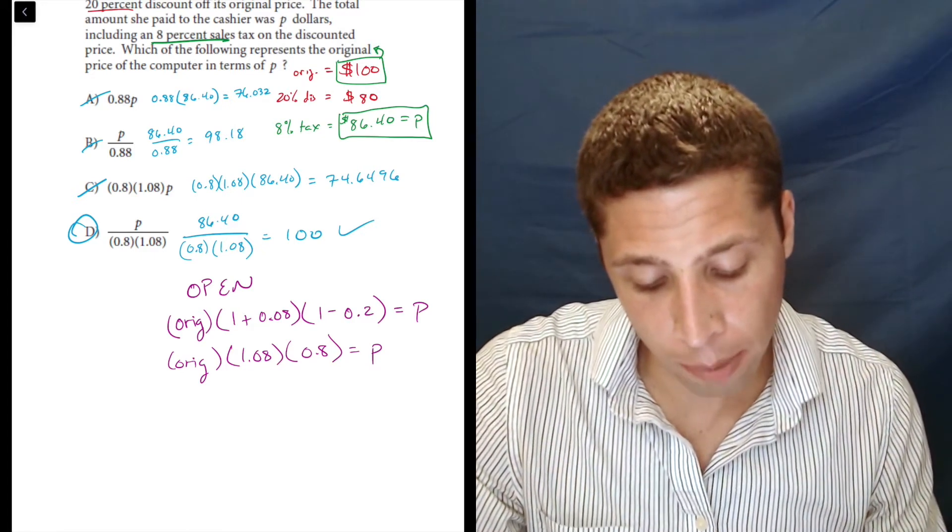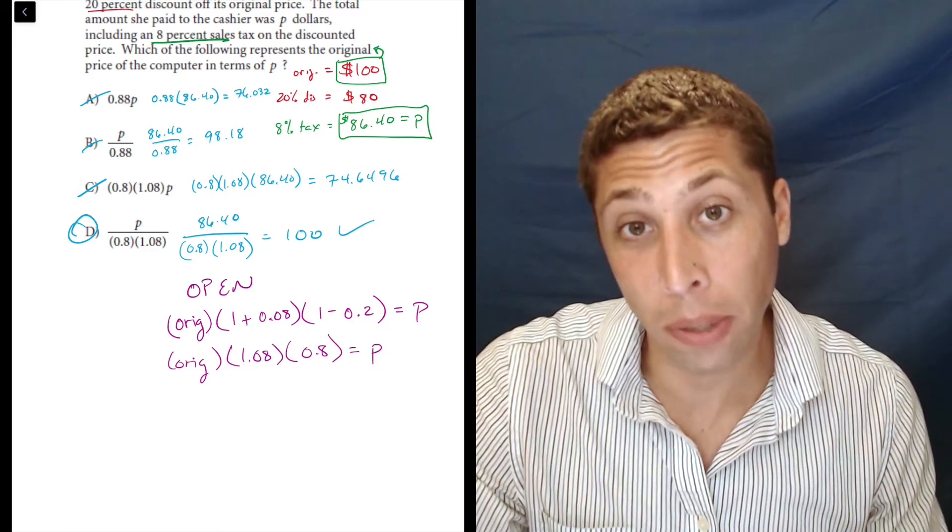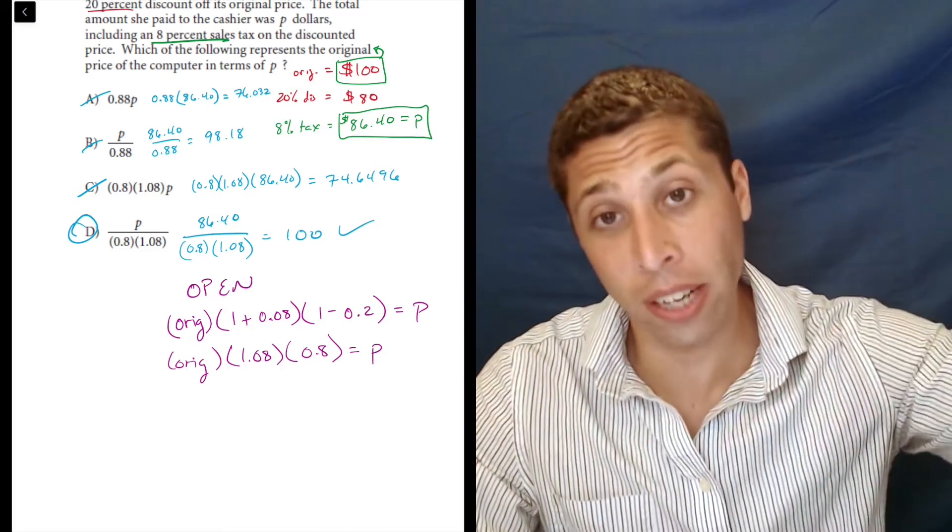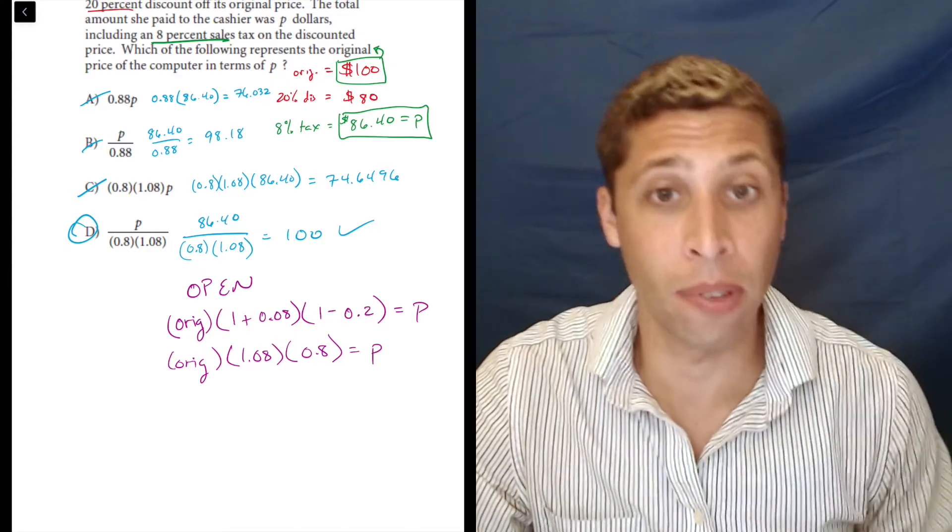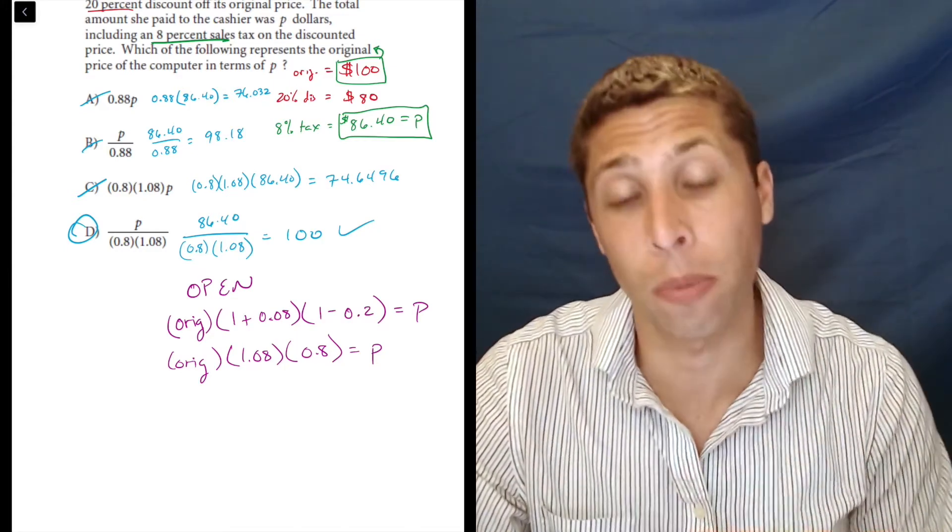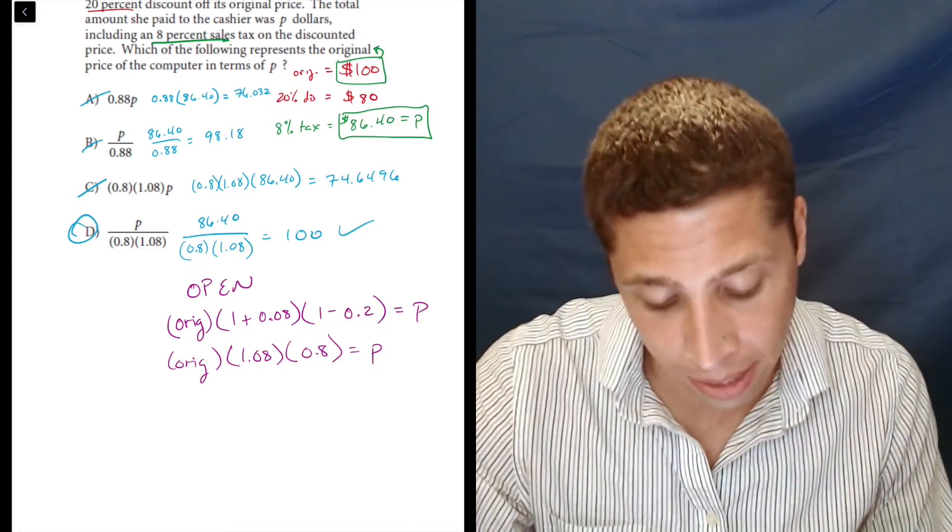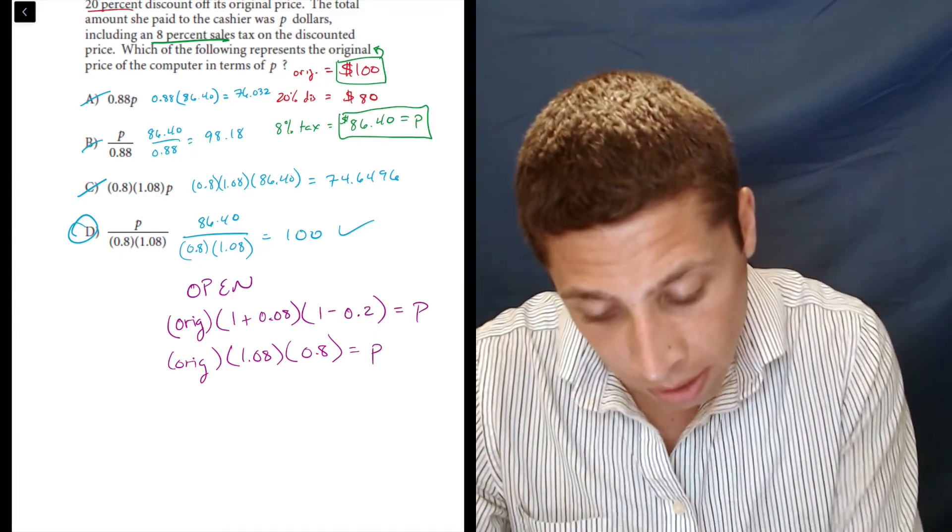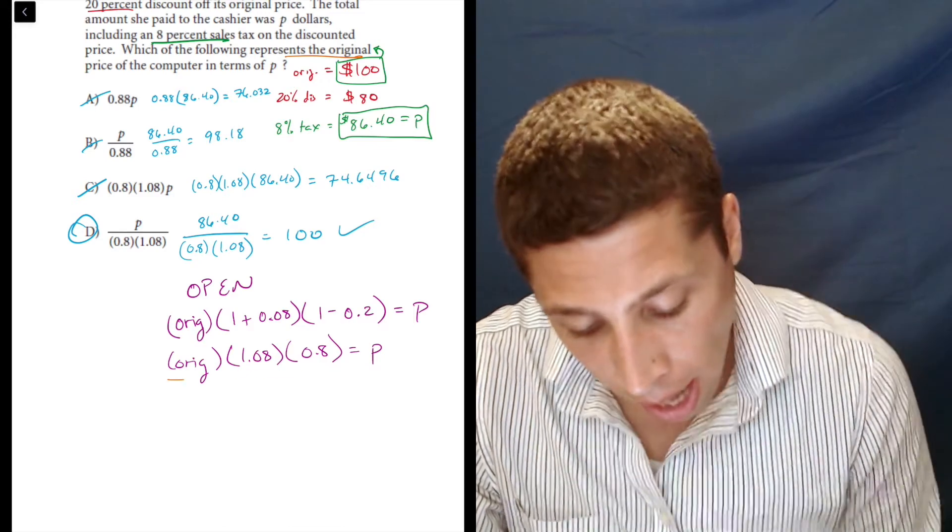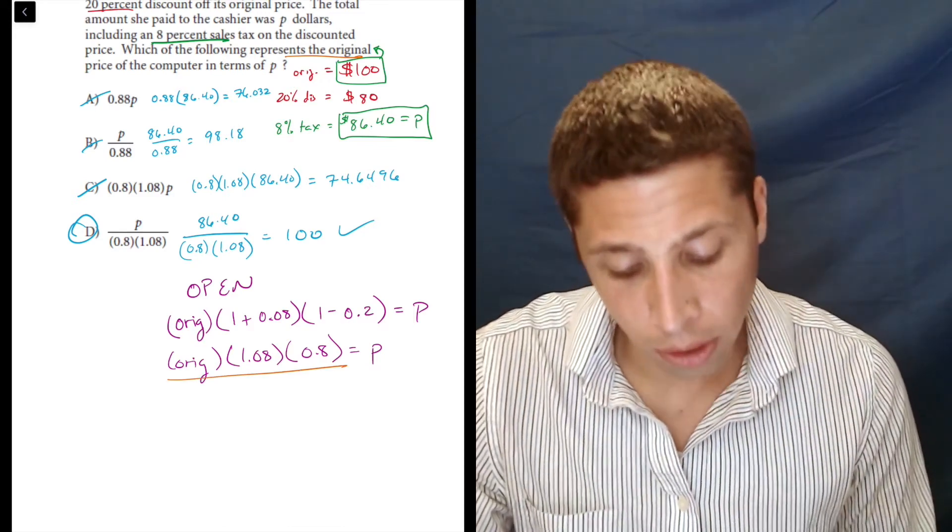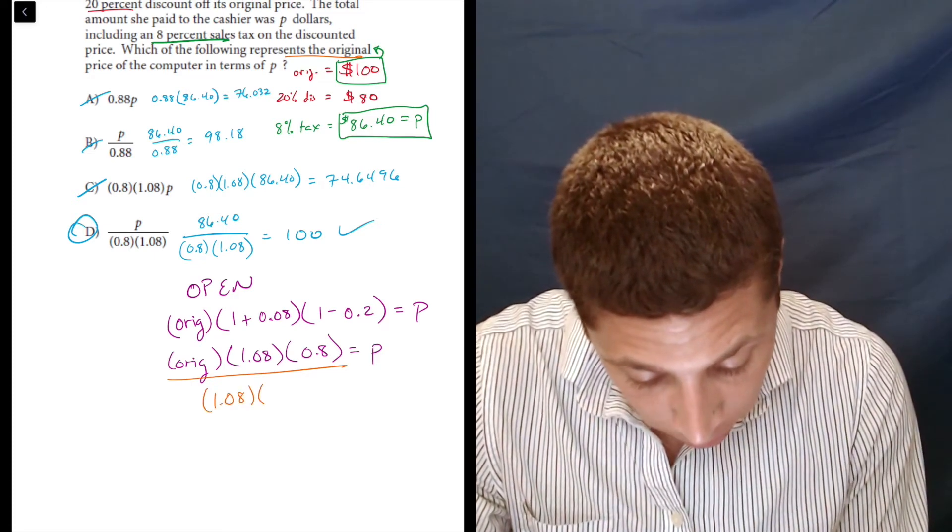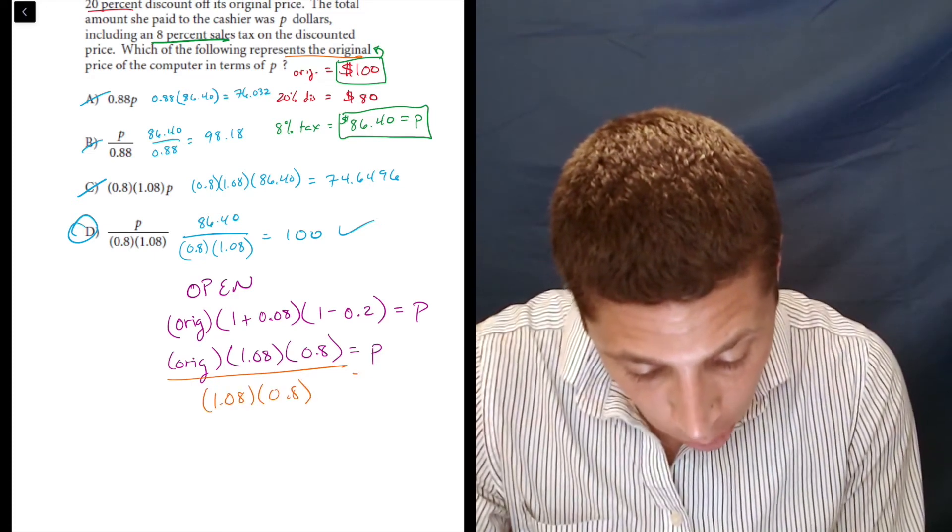And so sometimes we're doing 1 plus P or 1 plus the percentage. If it's an added percentage, if it's greater than, more than. But other times, if it's a discount, it's less a certain percent. That's what we're going to do, 1 minus. And so now, if they're asking which of the following represents the original, I can see, well, my original, I can get that alone, I can isolate it by dividing by 1.08 and 0.8.